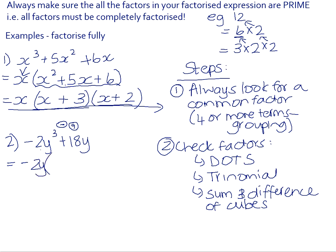Take out negative 2y as a common factor. That leaves you with y squared minus 9. And indeed, there is the difference of two squares, which factorises into a sum and difference product. Everything there is now fully factorised.